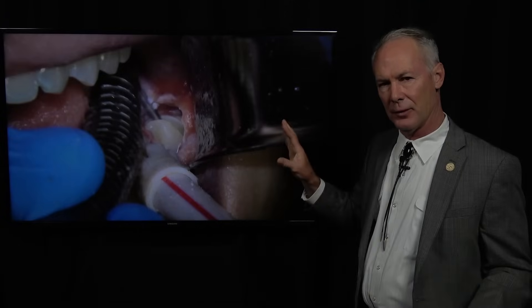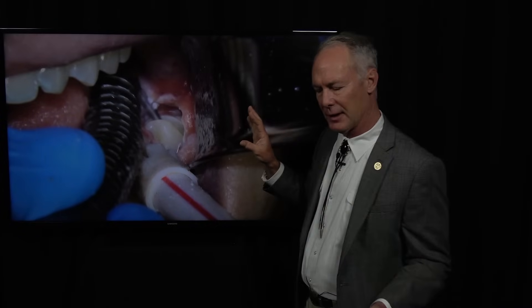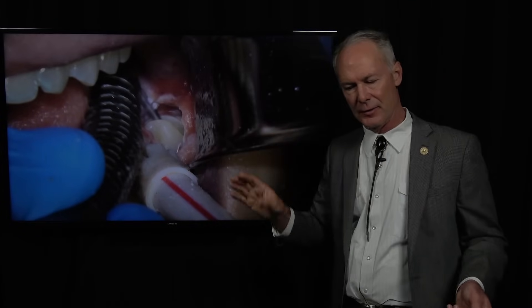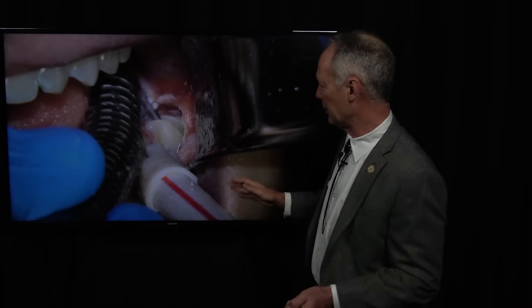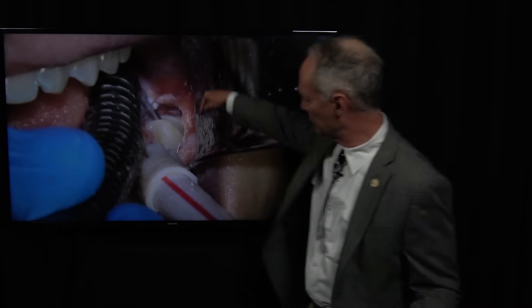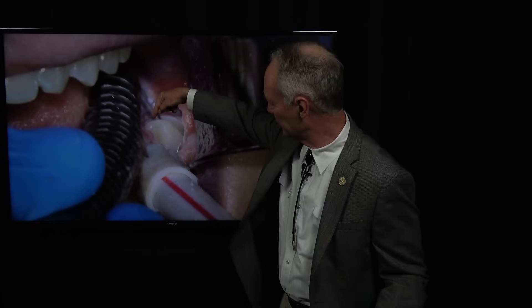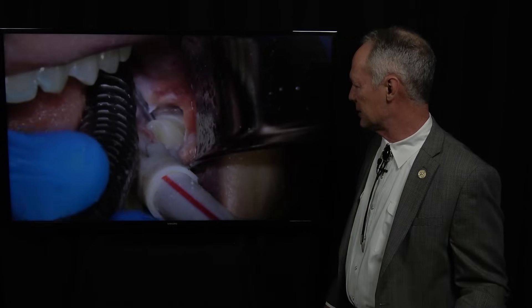So you want to measure on your radiograph ahead of time how far it is to the furcation, because we want to be extremely aware of the inferior alveolar nerve. We don't want to traumatize that nerve. We certainly don't want to cut the nerve. We don't want to get anywhere close to it. So I'm certain that I'm only going to the furcation of this tooth.